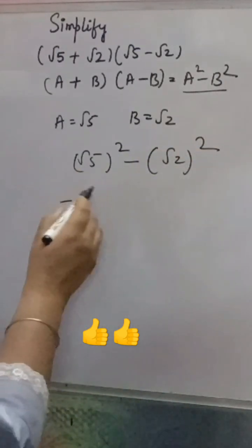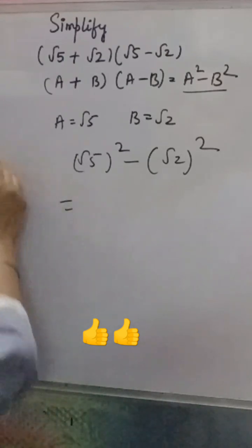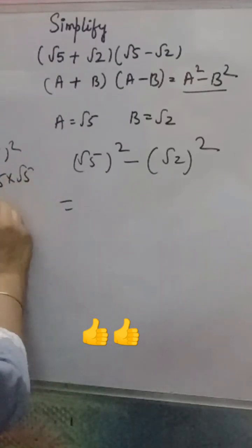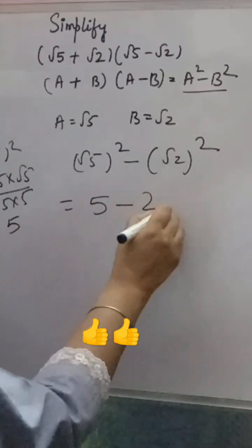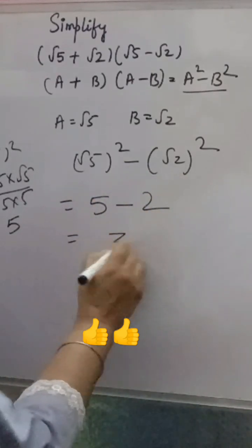Root 5 square means root 5 into root 5, so it will come root 5 into root 5. You will get root 5 into 5 that is only 5. Same way root 2 into root 2 will be only 2. So 5 minus 2 is 3.